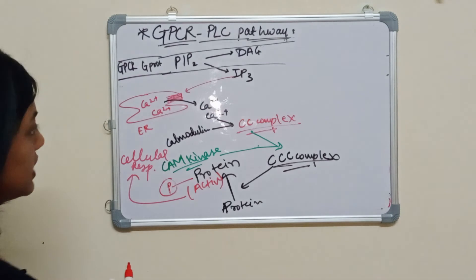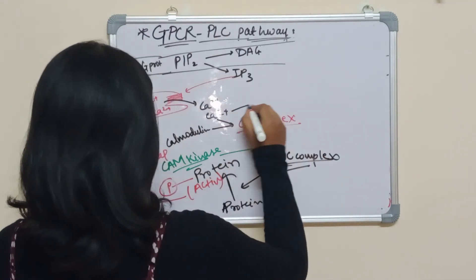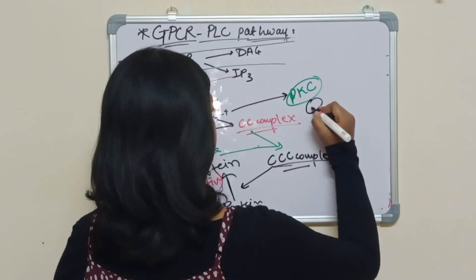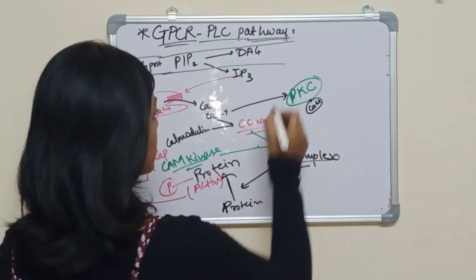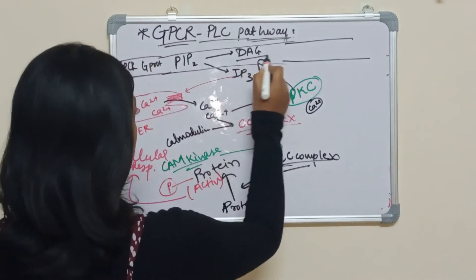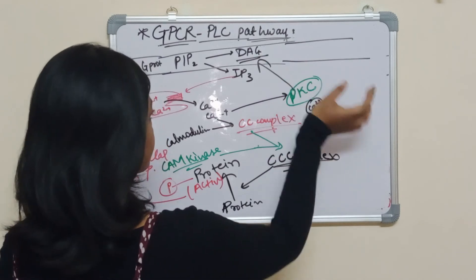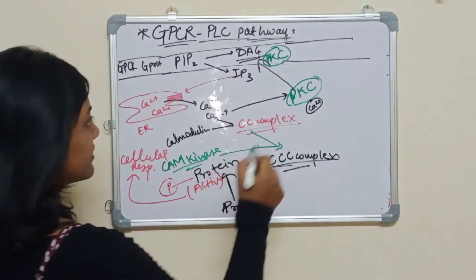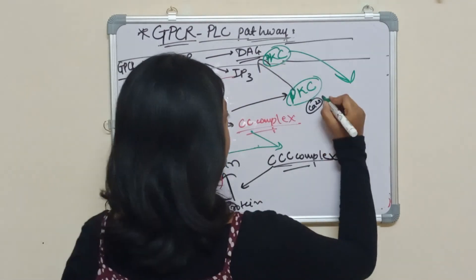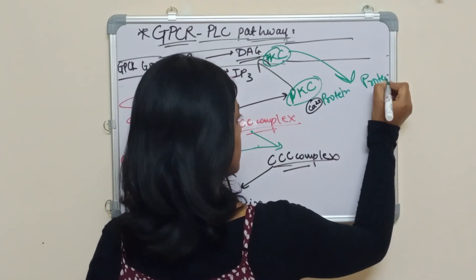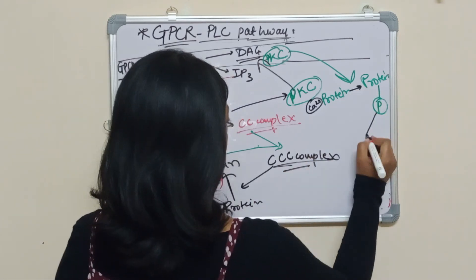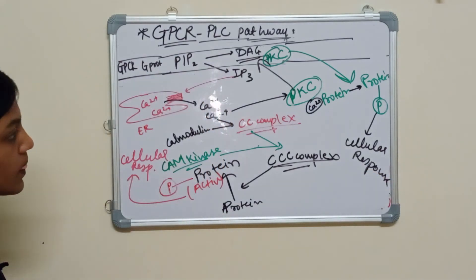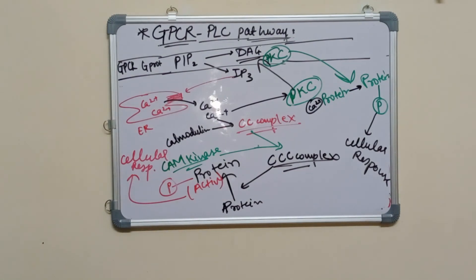In the next pathway, the calcium binds to PKC, which moves to the plasma membrane where DAG was present. The PKC-calcium complex binds to DAG and gets activated. The activated PKC phosphorylates any other protein by adding a phosphate group, and the phosphorylated protein shows a cellular response. This was the GPCR PLC pathway.